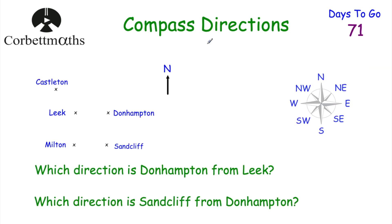Now let's have a look at compass directions. It's important you know north, east, south, and west. Some people remember the phrase 'never eat shredded wheat' — north, east, south, west. In between north and east you've got northeast; between south and east, southeast; between south and west, southwest; and between north and west, northwest. It's important you know those compass directions.